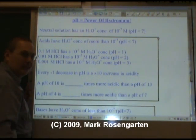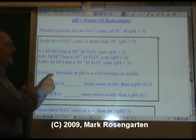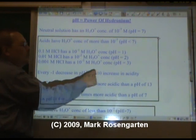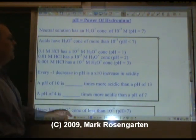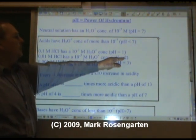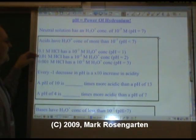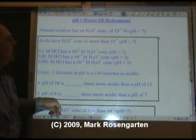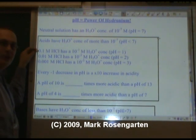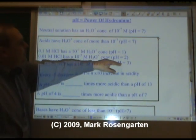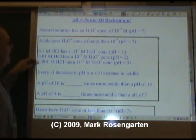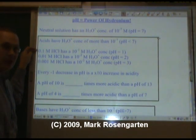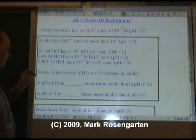Every minus 1 decrease in pH, therefore, is a 10-fold increase in acidity. Notice that when we go from a pH of 3 to a pH of 2, the acid gets 10 times stronger. We go from a pH of 2 to a pH of 1, it's again 10 times stronger. If the difference is 2 in pH, then it's 100 times stronger, 2 powers of 10.